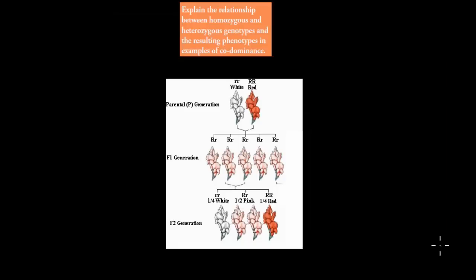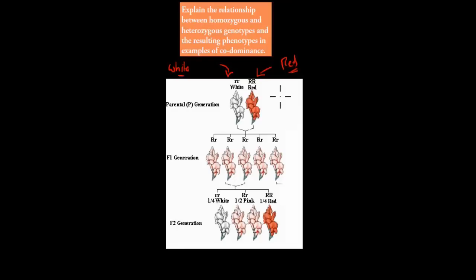If you were to cross a white rose — this here is your white rose, and it's homozygous white, which means both its alleles are white — with a red rose that is homozygous red, so both its alleles are red, what do you actually get? You would expect the offspring to be red or white, whichever one is dominant, but in this case what you actually get is them all being pink.